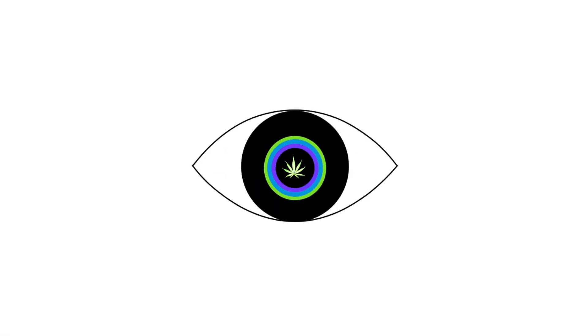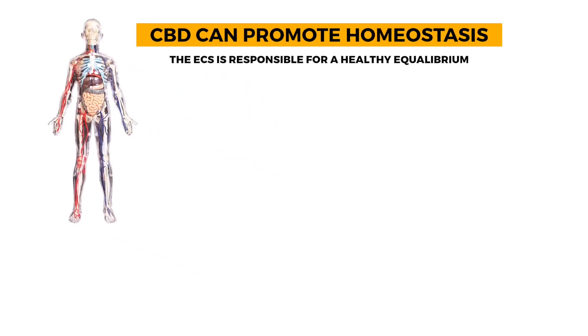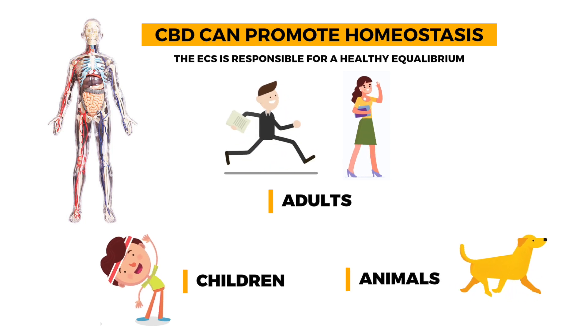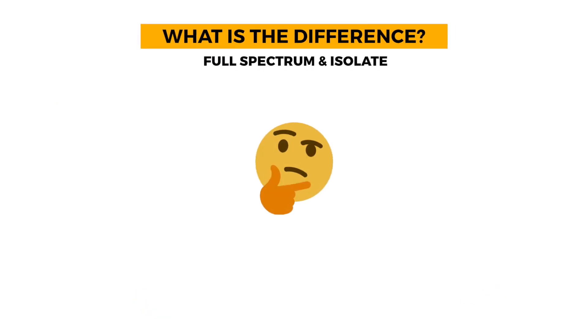CBD can help the endocannabinoid system function at its optimal state and accomplish its main goal: a healthy and stable equilibrium in adults, children, and animals. Here at Illuminant, you will see two forms of CBD: full spectrum and isolate.